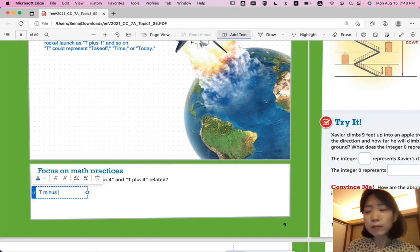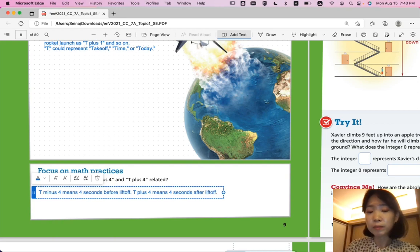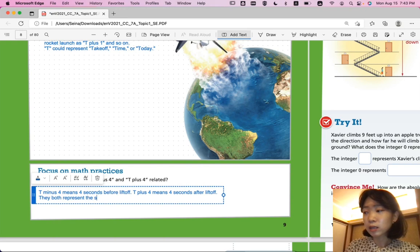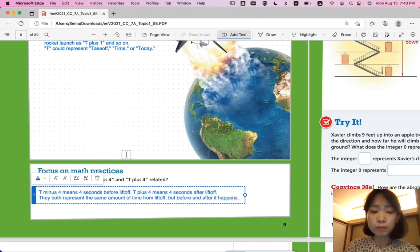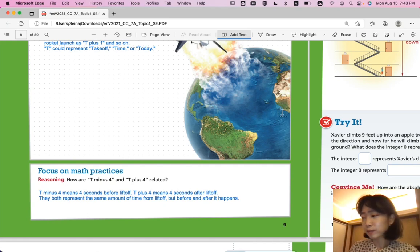So T-minus-4, let's write this down, means 4 seconds before liftoff. T-plus-4 means 4 seconds after liftoff. They both represent the same amount of time from liftoff, but before and after it happens. Does that make sense?